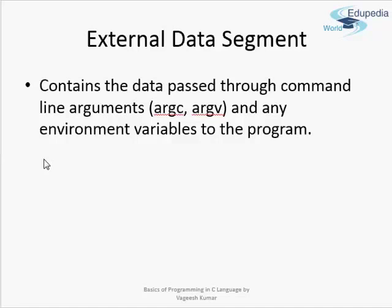Environment variables are a tool provided by almost every operating system to hold certain configurations. For example, your operating system may want to tell your processes the path of a particular file, or what version of the OS is running. That information is specified by a particular environment variable.